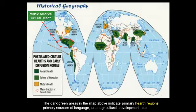In terms of historical geography, one of the things I want to point out is this is our first opportunity to identify cultural hearths. A cultural hearth is essentially a place — it's an ancient source of language, arts, and agricultural development. We're basically talking about a place on the globe where civilization arose and has been in existence continuously for thousands of years.